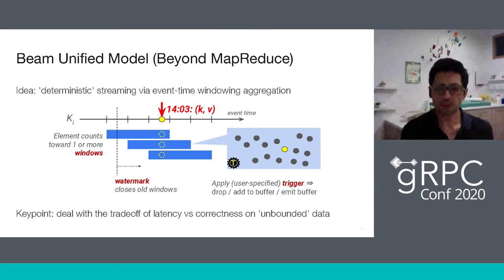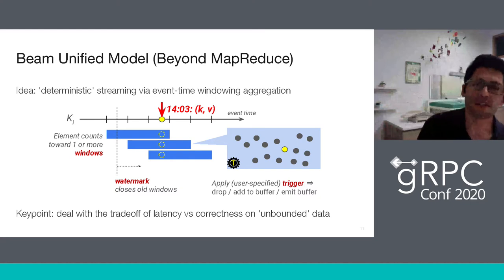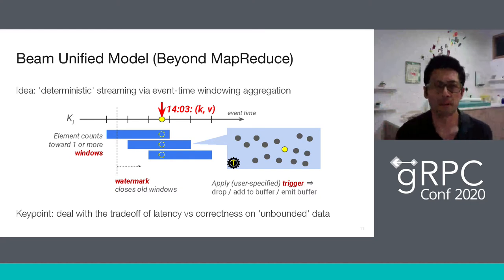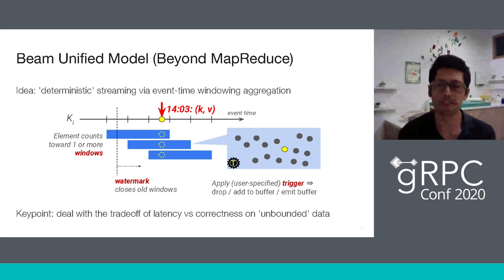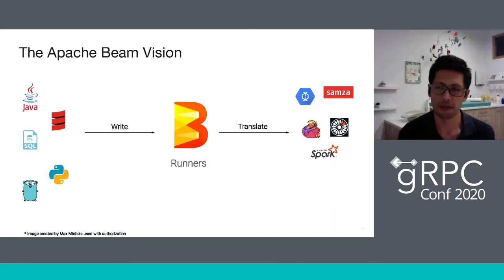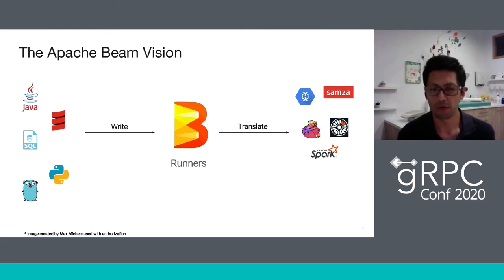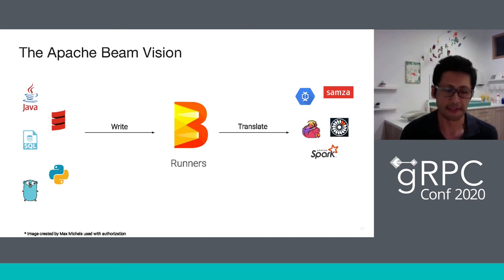When we talk about portability, we want to be able to write our pipelines in our favorite language and then translate those so they can be executed in the target system. For example, we want to run it in Spark or in Flink. We do this transformation with the runners.